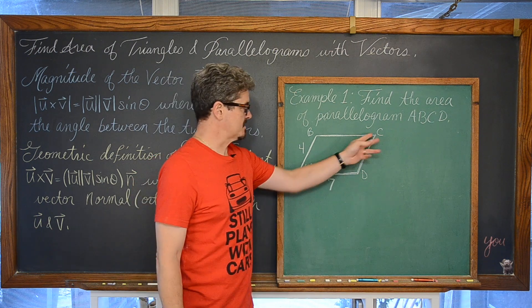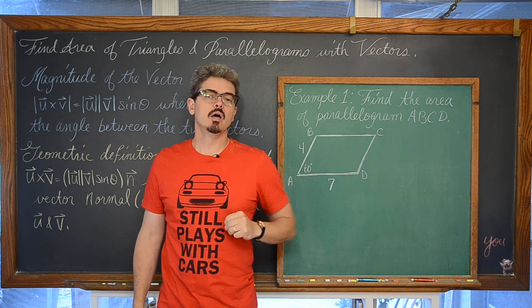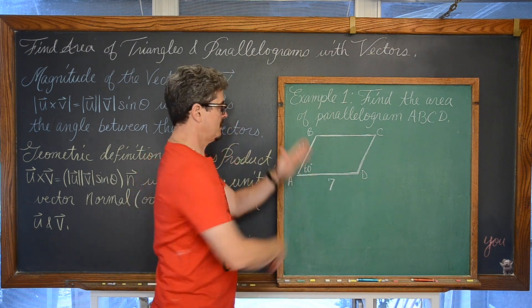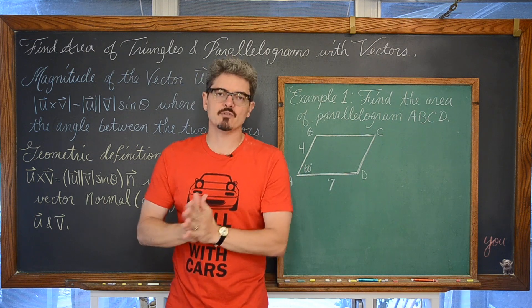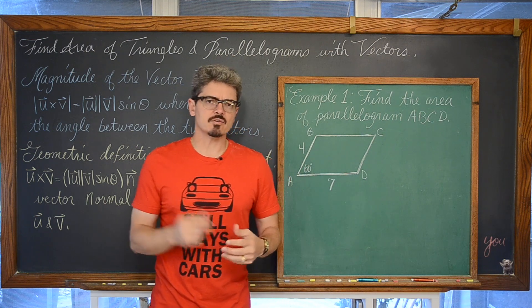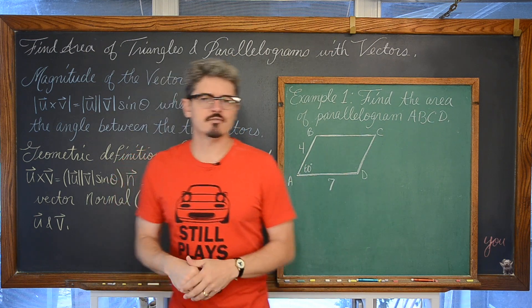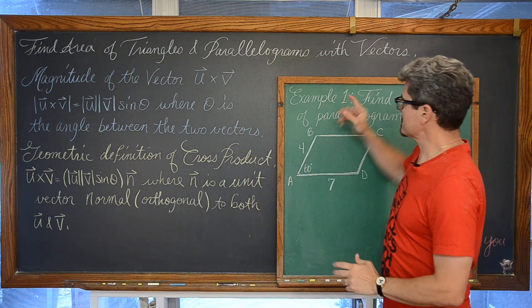So each of these vertices has an x, y, and z component. Or if two sides of your parallelogram are defined by a vector, our example is going to be a vector in component form that is in three space.